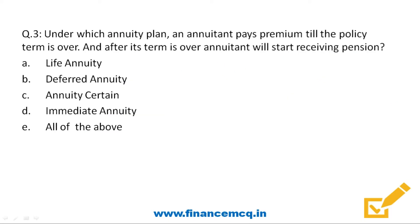Next question: under which annuity plan does the annuitant pay premium till the policy term is over, and after the term is over the annuitant starts receiving pension? The options are: life annuity, deferred annuity, annuity certain, immediate annuity, and last: all of the above.